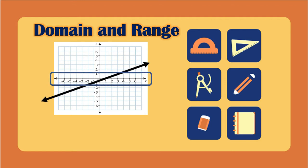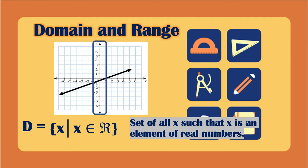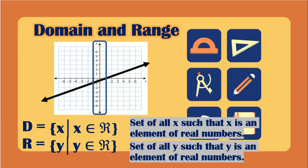All values of x will be used, so the domain is read as: the set of all x such that x is an element of real numbers, meaning all numbers — positive, negative, and zero — can be a value of x. For the range, if we extend the line or the graph, we can use all values positive, negative, and zero, so the range is the set of all y such that y is an element of real numbers.